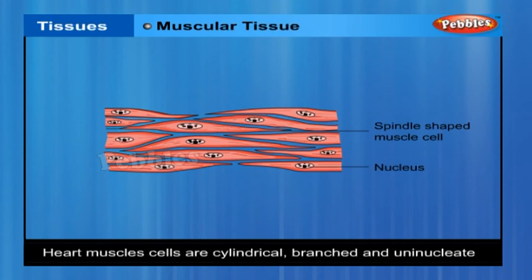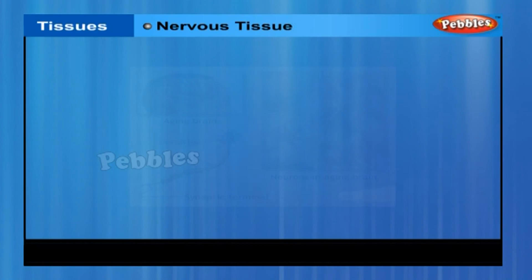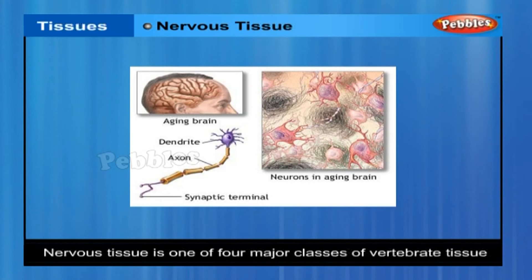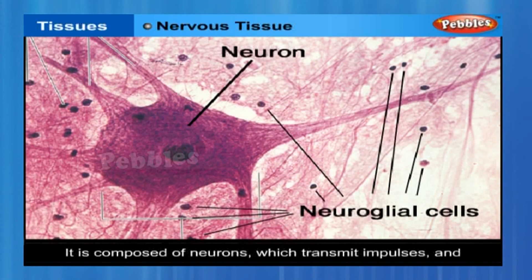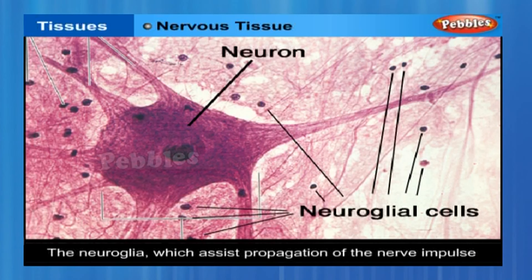Heart muscle cells are cylindrical, branched and uninucleate. Nervous tissue is one of four major classes of vertebrate tissue. The function of the nervous tissue is communication between parts of the body. It is composed of neurons which transmit impulses and the neuroglia which assist propagation of the nerve impulse as well as provide nutrients to the neuron. All nervous tissue of an organism makes up its nervous system, which includes the brain, spinal cord and nerves throughout the organism.